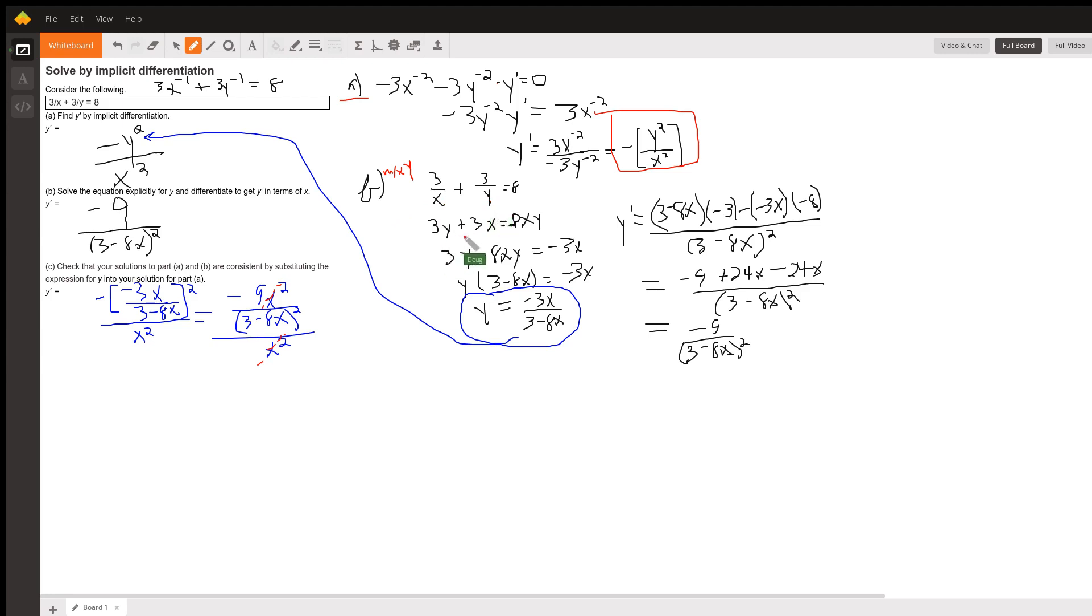That gives us 3y plus 3x equals 8xy. We want to solve for y, so I transpose the 8xy to the left side of the equation and the plus 3x to the right side. Factor out the y.